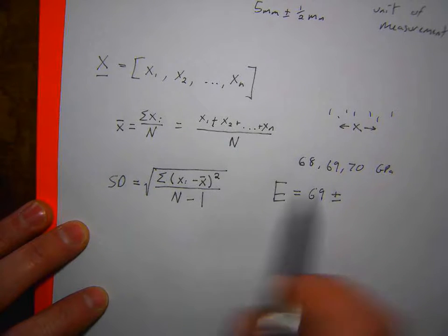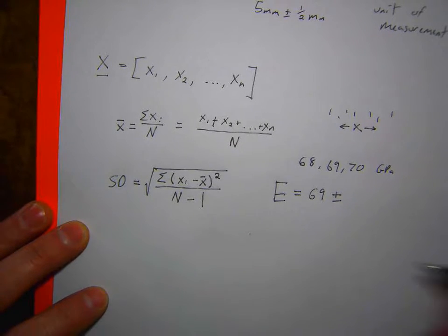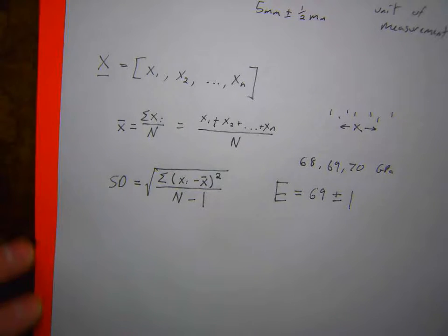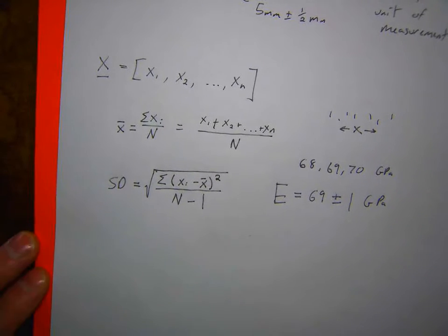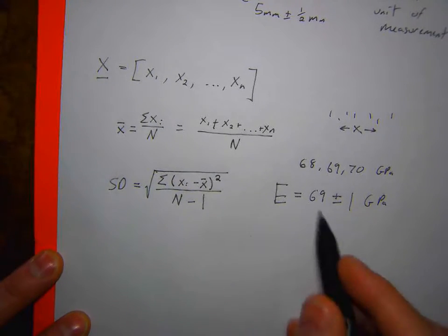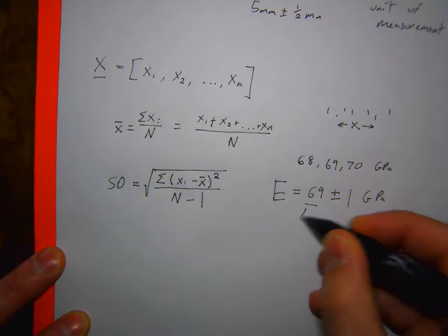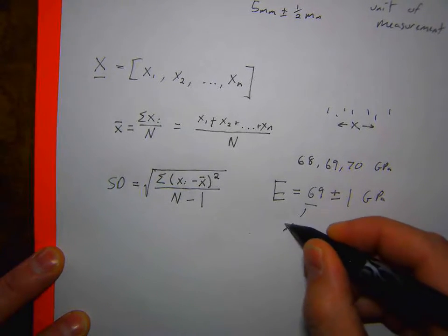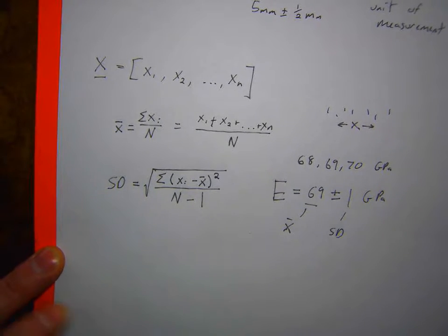Working that out: 1 squared plus 1 squared over 2 is just 1. So when you're reporting this, the average is 69 GPa and the standard deviation is 1 GPa. This is the average of the data set and this is the standard deviation of your data set.